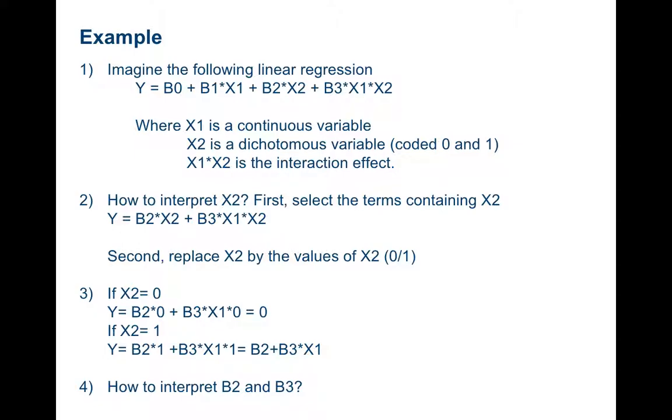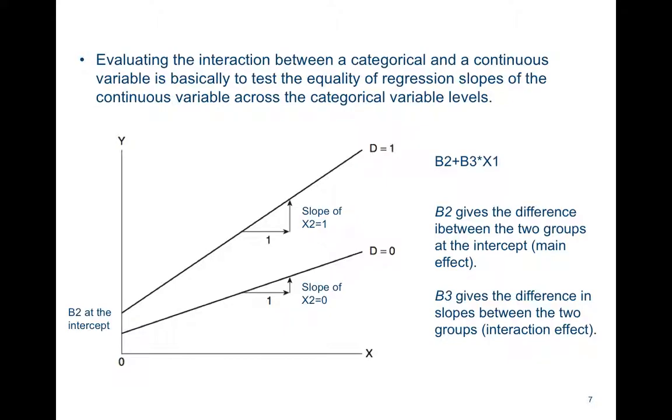So how to interpret graphically beta 2 and beta 3? Well, for instance, this figure shows on the X-axis the value of X1, which is a continuous variable. On the Y-axis, the values of the dependent variable Y. The first line is the line for X2 when X2 is 0.